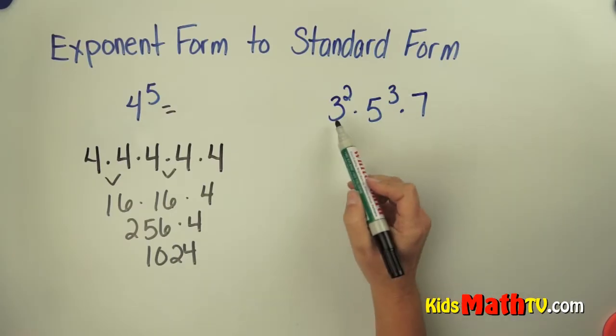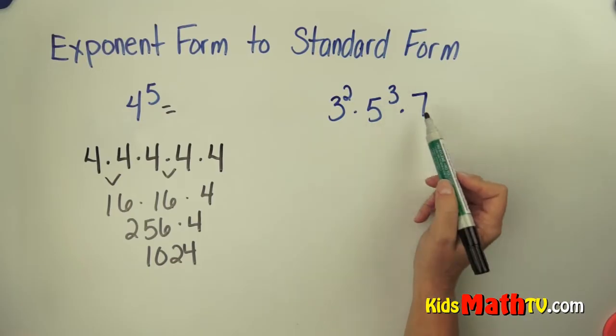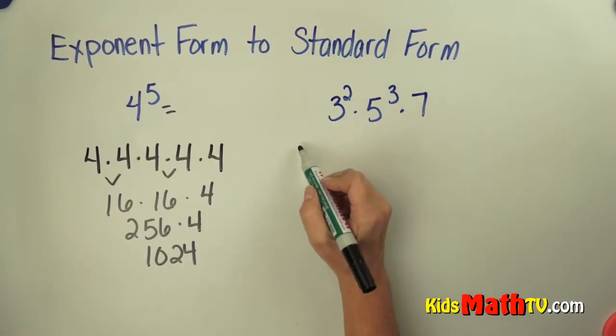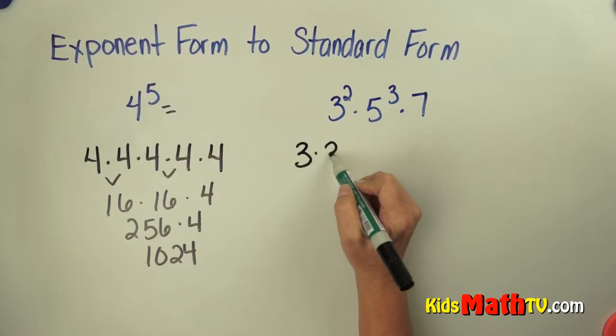Another example, 3 to the 2nd power times 5 to the 3rd power times 7. This means a base of 3 written 2 times. 3 times 3.